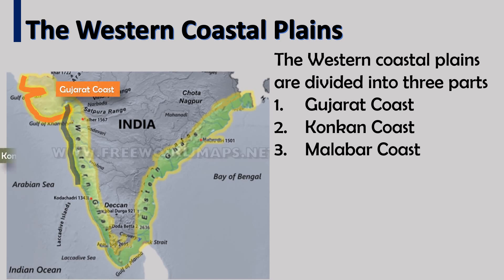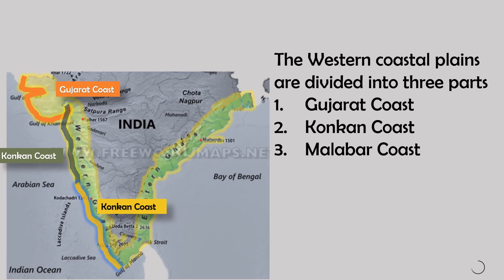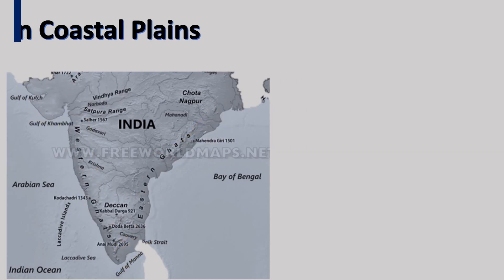The western coastal plains are about 15 to 30 kilometers wide.